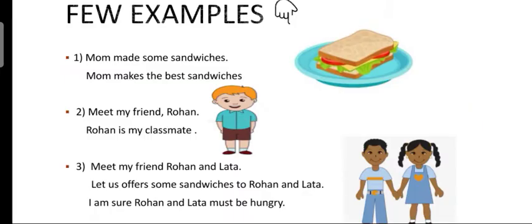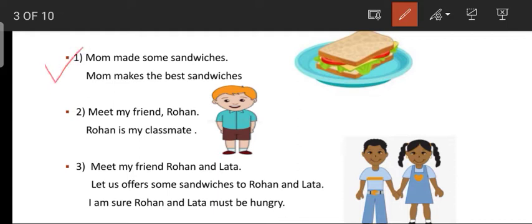Before we start with the topic, let us have a look at a few examples. The first example: Mom made some sandwiches. Mom makes the best sandwiches. Second example: Meet my friend Rohan. Rohan is my classmate. And the third sentence: Meet my friend Rohan and Lata. Let us offer some sandwiches to Rohan and Lata. I am sure Rohan and Lata must be hungry. So in these sentences, you might have observed that the nouns like Mom, Rohan, Rohan and Lata have been repeated again and again.